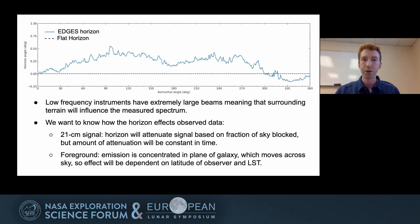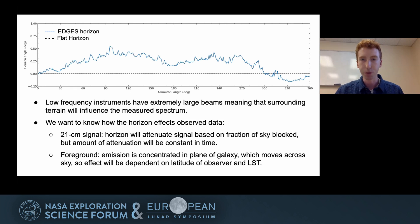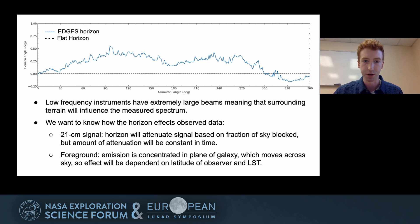We can break the effect of the horizon into two different pieces on the two main components of these observations. The first is the 21 centimeter signal itself, which is pretty simple — it's just going to be attenuated by some factor that depends on the portion of the sky blocked by the horizon. But the effect of the horizon on the foreground component is a little bit more complicated, because the foreground emission is concentrated in the plane of the galaxy, which moves across the sky in time. This means that in addition to a frequency-dependent effect, the horizon can also introduce additional time dependence into the observations.